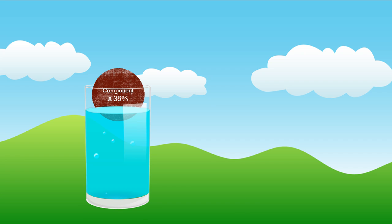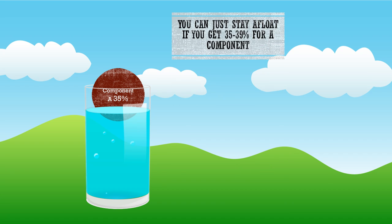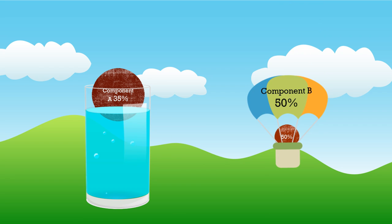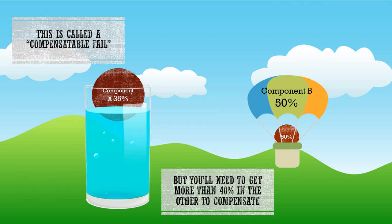You can just stay afloat with a component if you get between 35% and 39%. But if you do, you'll need to get more than 40% for the other component in order to compensate for it. And this is called a compensatable fail.